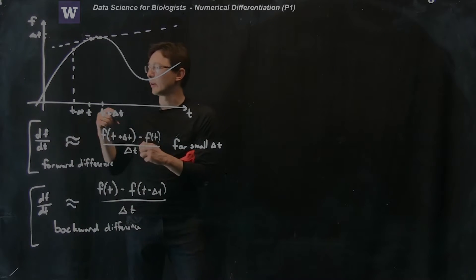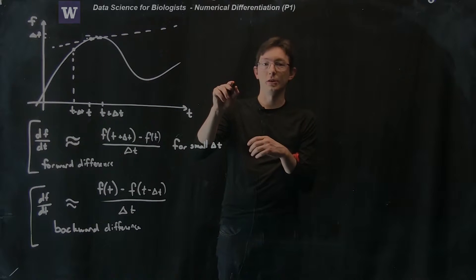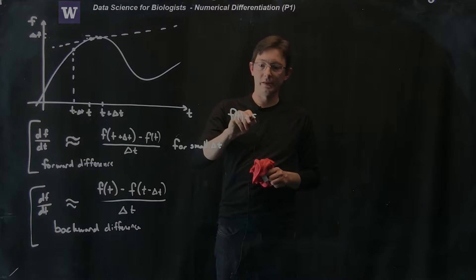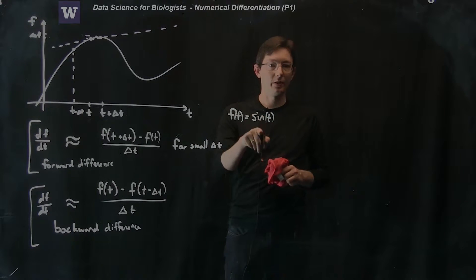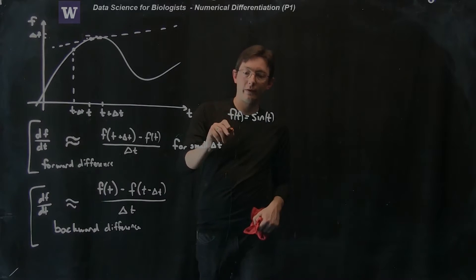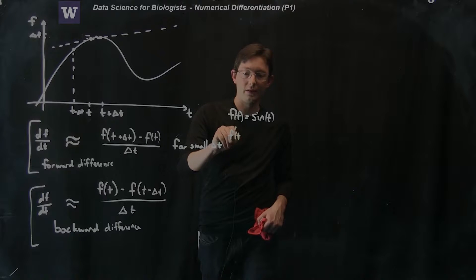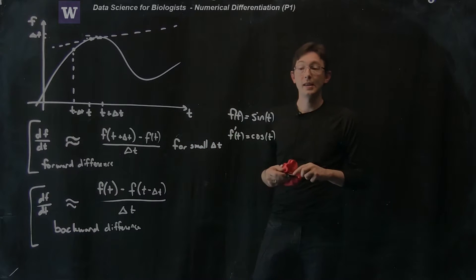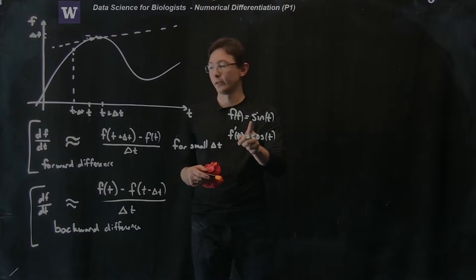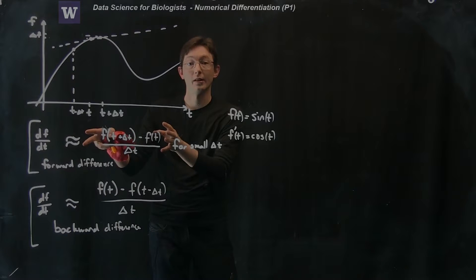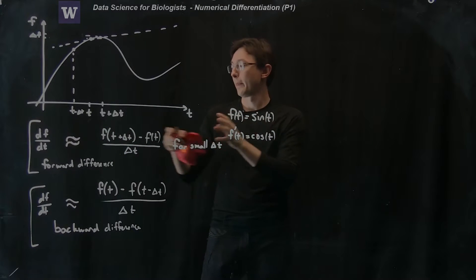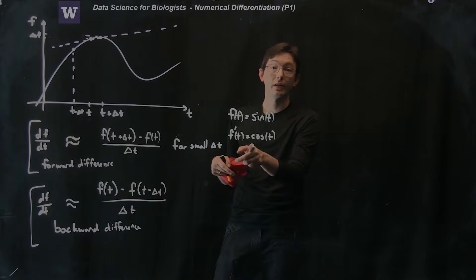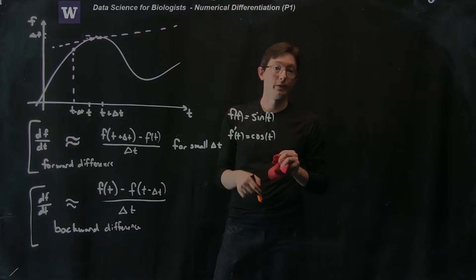We're going to do this on the following function: f(t) = sin(t). We know the derivative f′(t) = cos(t). This is a simple example where we know exactly what the derivative is, so we can see how close our finite difference approximation gets. We're going to evaluate this function using both forward and backward difference schemes and see how close our numerical derivative is to the actual cosine derivative.